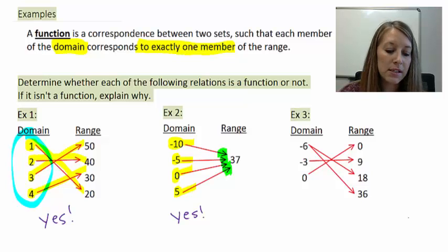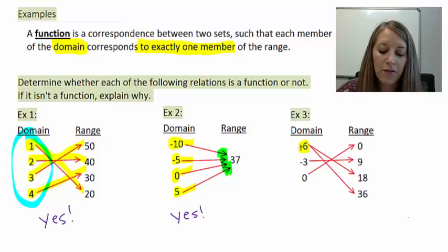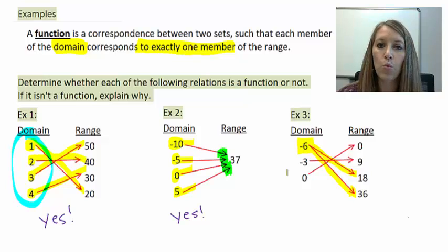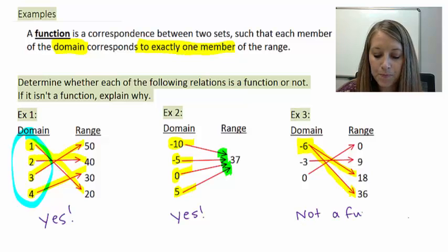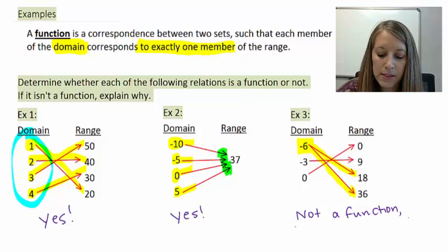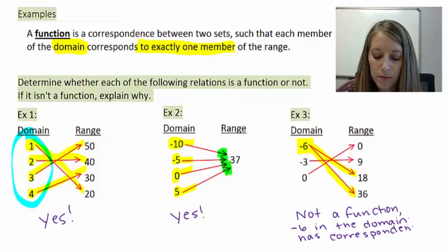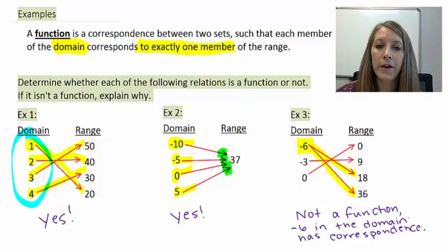That gives insight into example three. If we look at the first member of our domain, we see it has two correspondences: six corresponds to 18 and negative six corresponds to 36 at the same time. You cannot have repeated domain values. So example three is not a function because negative six in the domain has repeated correspondence. A quick recap: domain values cannot be repeated, but range values can.